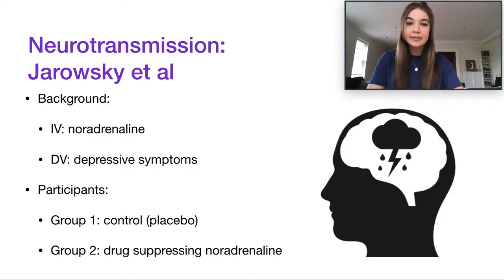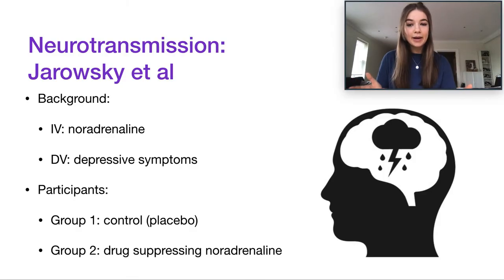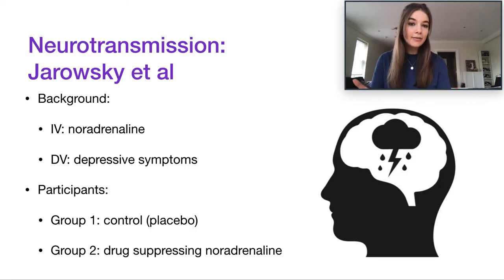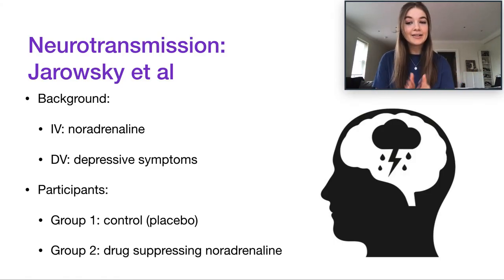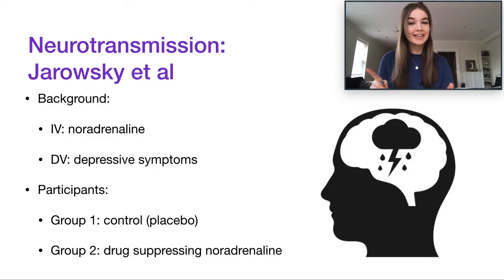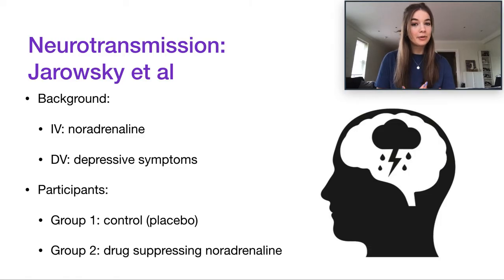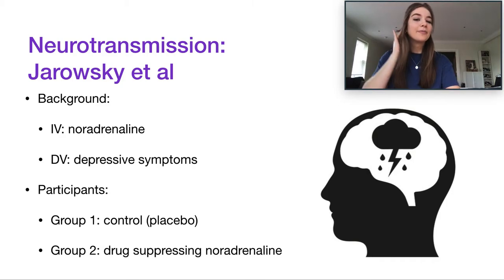In a study by Jurowski et al., researchers conducted an experiment with noradrenaline as the independent variable and depressive symptoms as the dependent variable. They wanted to see if changing noradrenaline levels could impact depressive symptoms. There were two groups: a control group who received a placebo drug, and a second group who received a drug that suppressed noradrenaline. Since low noradrenaline is linked to depression, you might already be questioning the ethics of this study — and rightly so.